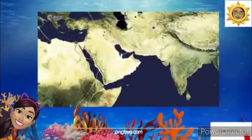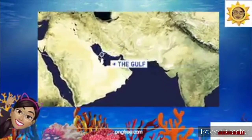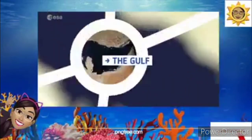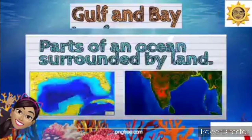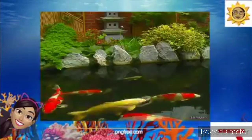So, about this one? The answer is there — the gulf. So, gulf and bay — it's part of an ocean surrounded by land. The water is in the middle and it is surrounded by land. Say gulf and bay. Very good.